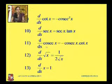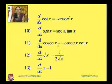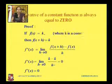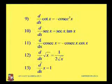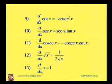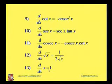Cosec x also starts with 'c', so its derivative has a minus sign: d/dx of cosec x = −cosec x · cot x. Also, derivative of √x = 1/(2√x). And remember: derivative of x = 1, because we are differentiating x with respect to x, giving dx/dx = 1.